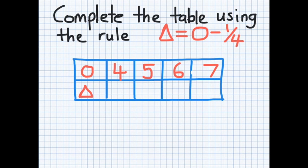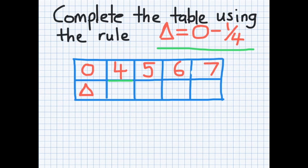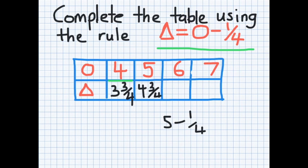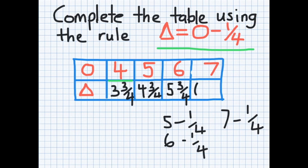Here we have a table and a number sentence involving something a bit tricky — we're looking at a fraction. The value of triangle is equal to circle take away a quarter. The first one: circle is four, so four take away a quarter will end up being three and three quarters. Five take away a quarter will end up being four and three quarters. Six take away a quarter ends up being five and three quarters. Then seven take away a quarter ends up being six and three quarters. You can see the pattern: three and three quarters, four and three quarters, five and three quarters, six and three quarters.